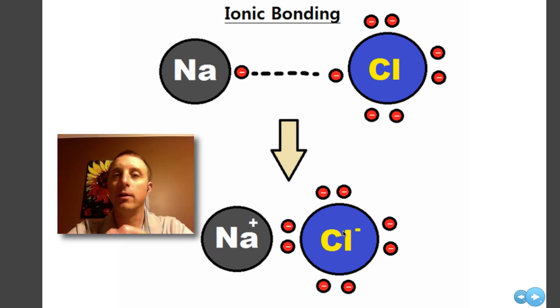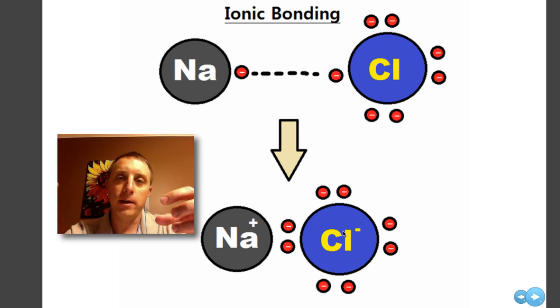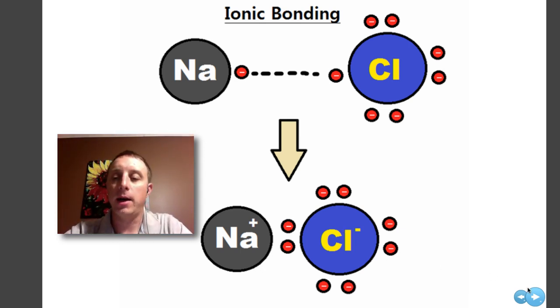This happens in salts. Sodium and chloride are table salt. So when you have two atoms very different in electronegativities, one will pull the electron from the other one and form an ionic bond.